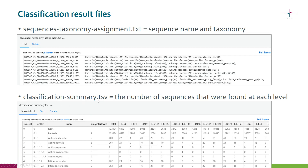The classification summary file shows the numbers of sequences that were found at each level. Here we have the taxons at the different levels, and then we have the numbers in total and per sample for these different taxa — so the number of sequences.